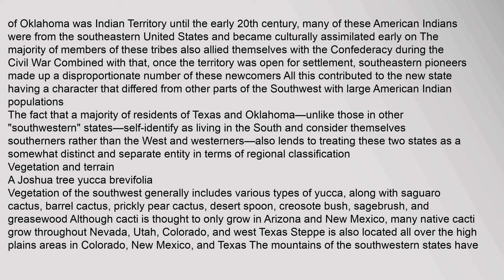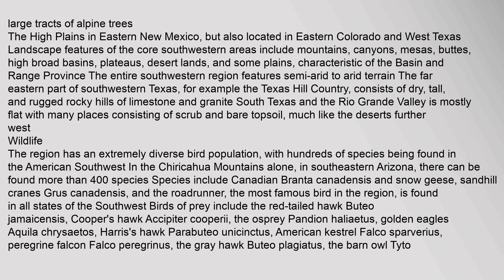Vegetation of the Southwest generally includes various types of yucca, along with saguaro cactus, barrel cactus, prickly pear cactus, desert spoon, creosote bush, sagebrush, and greasewood. Although cacti are thought to only grow in Arizona and New Mexico, many native cacti grow throughout Nevada, Utah, Colorado, and West Texas. Steppe is also located all over the High Plains areas in Colorado, New Mexico, and Texas. The mountains of the Southwestern states have large tracts of alpine trees. Landscape features of the core Southwestern areas include mountains, canyons, mesas, buttes, high broad basins, plateaus, desert lands, and some plains. The entire Southwestern region features semi-arid to arid terrain. The far eastern part of Southwestern Texas — for example, the Texas Hill Country — consists of dry, rugged rocky hills of limestone and granite. South Texas and the Rio Grande Valley is mostly flat, with many places consisting of scrub and bare topsoil, much like the deserts further west.